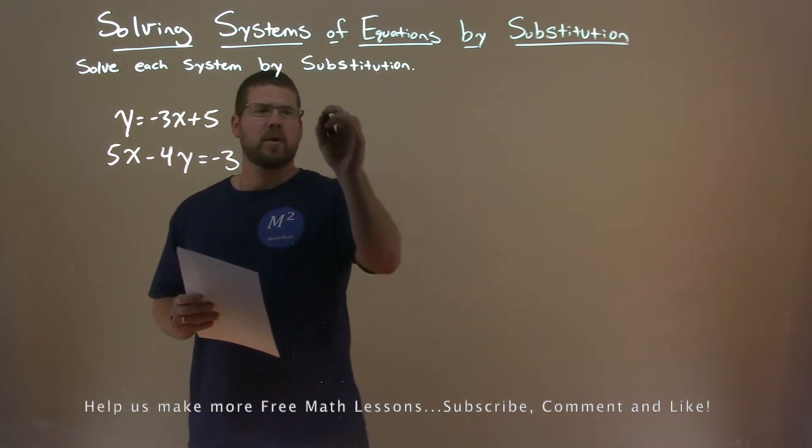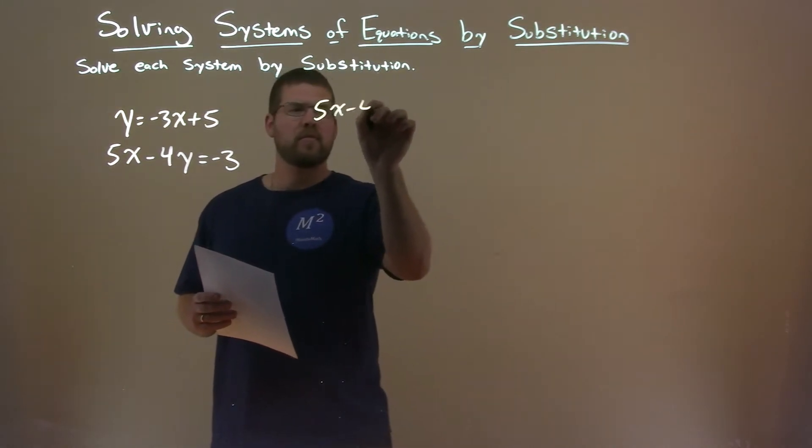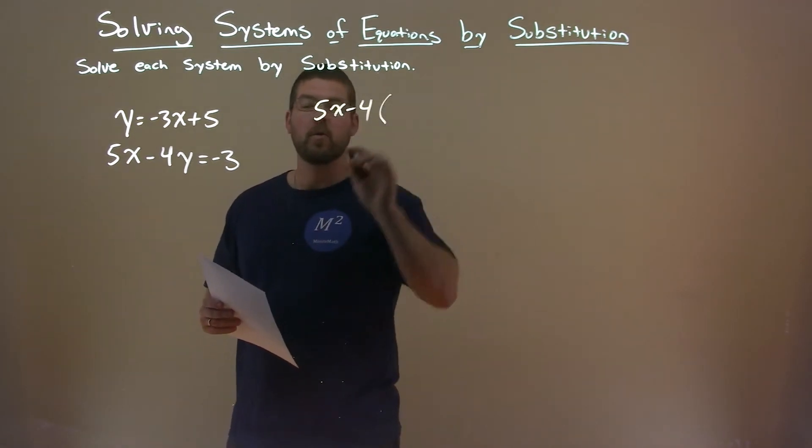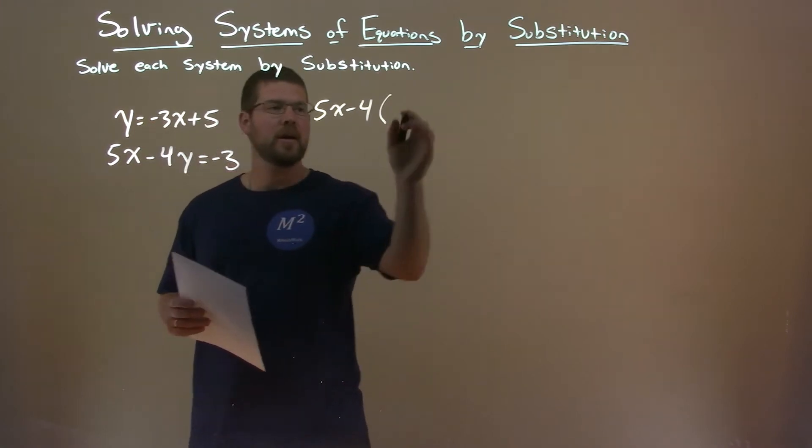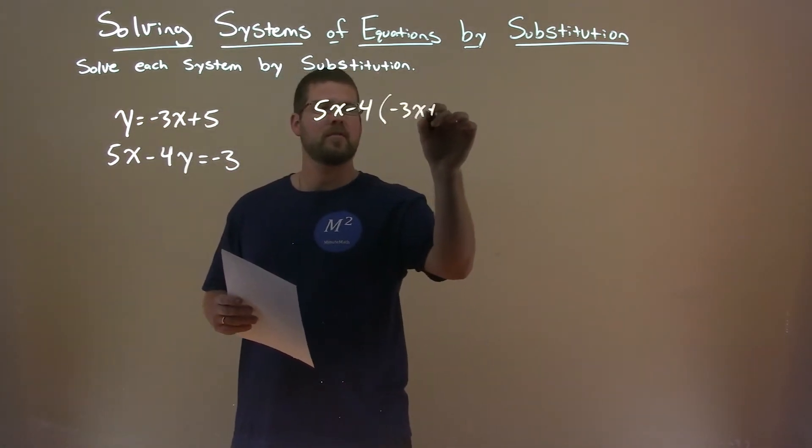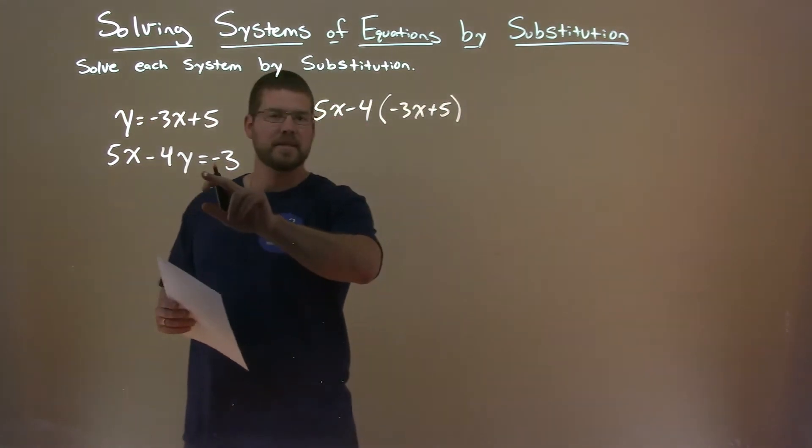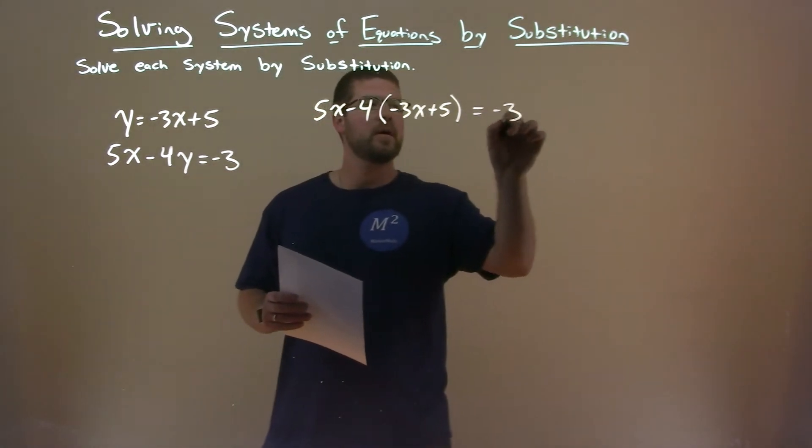If you take the second equation, 5x minus 4, but instead of the y, we're going to substitute the first equation, the y value here, being minus 3x plus 5. Then we continue the second equation, equals minus 3.